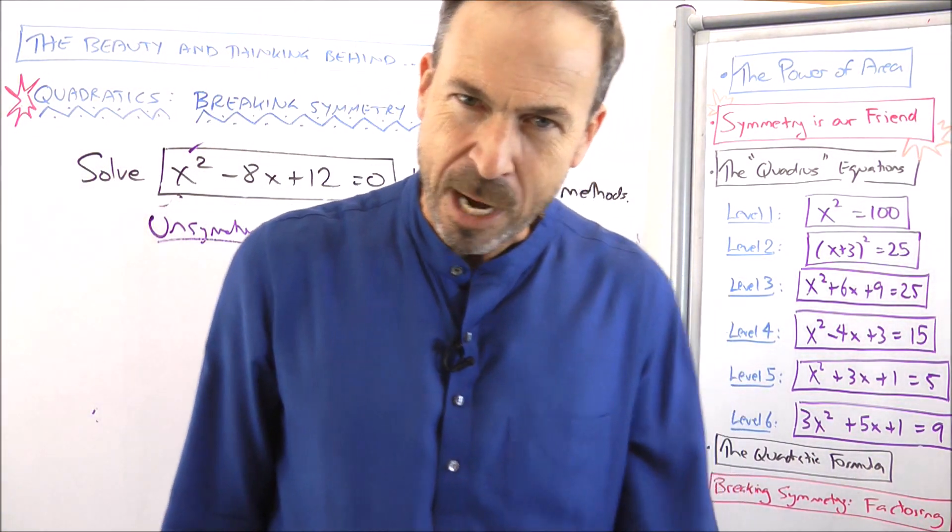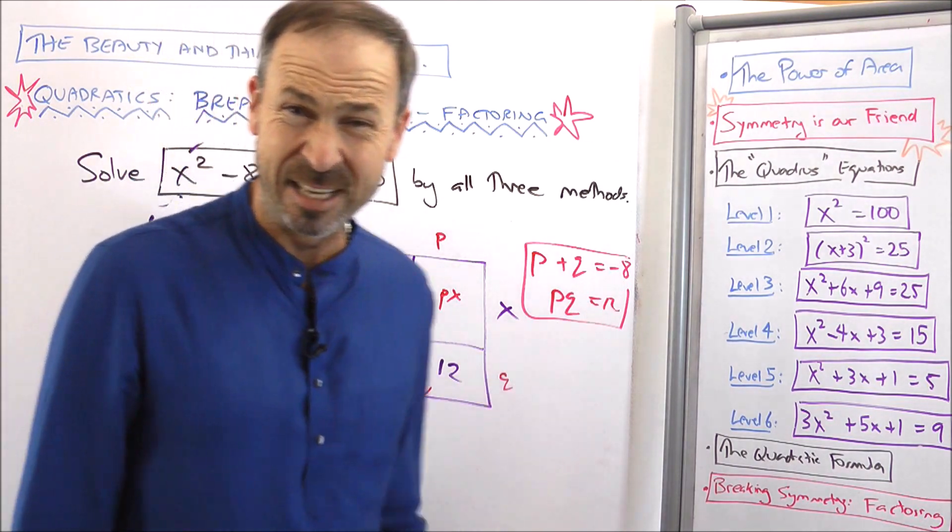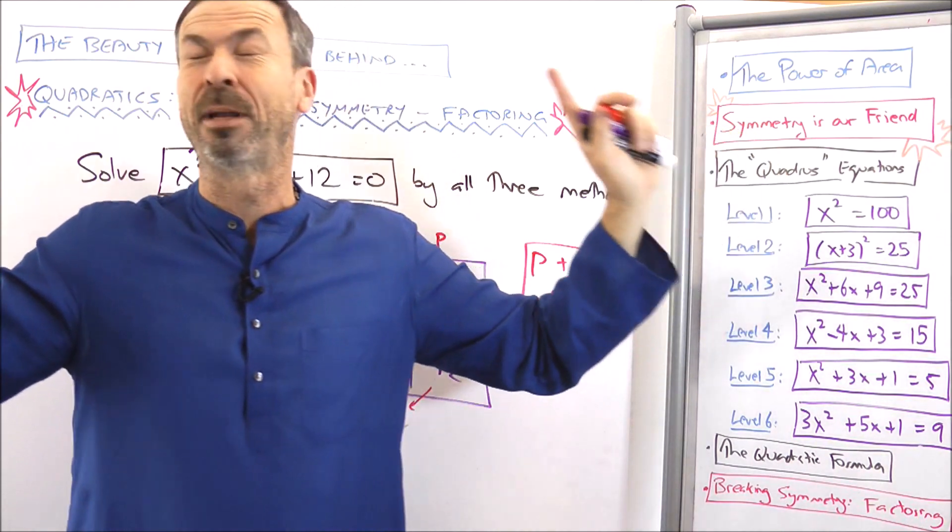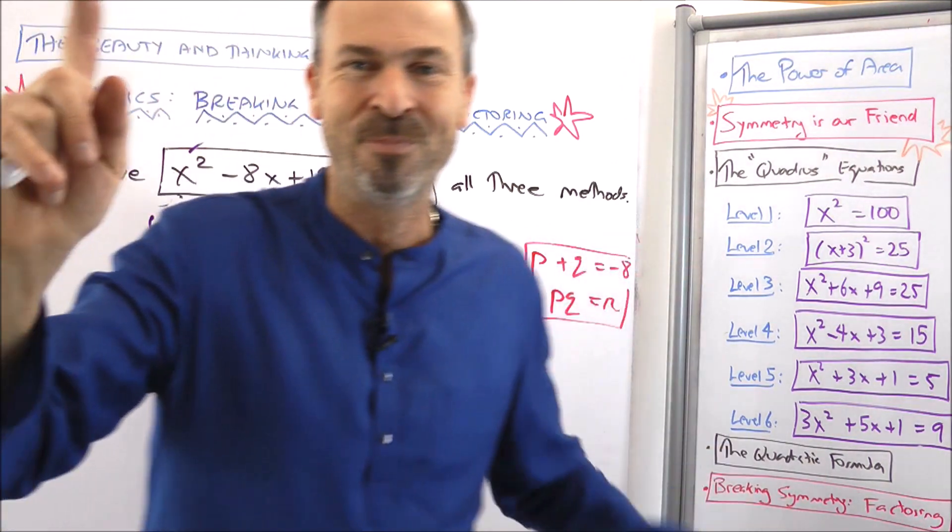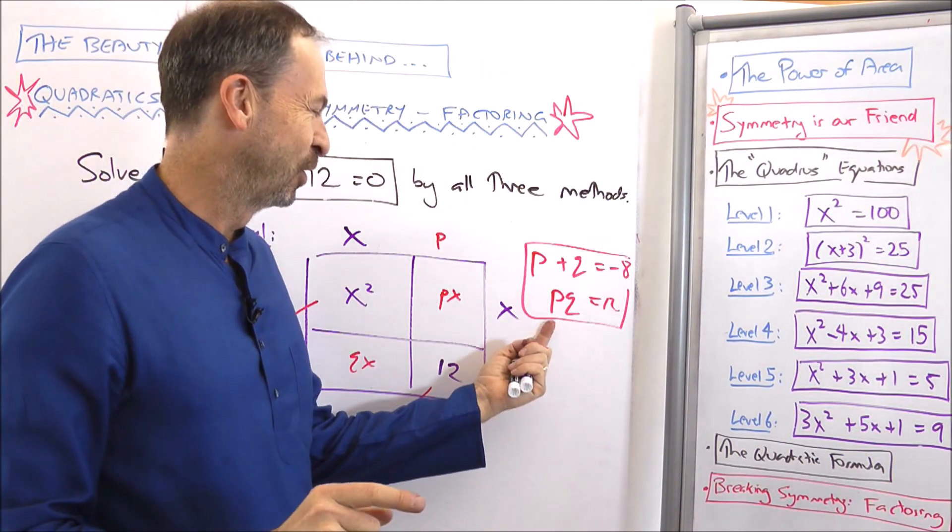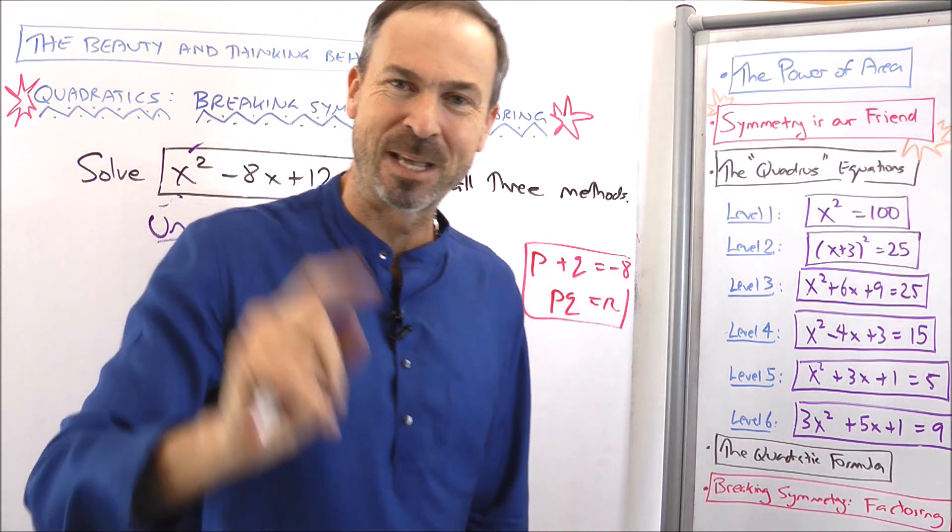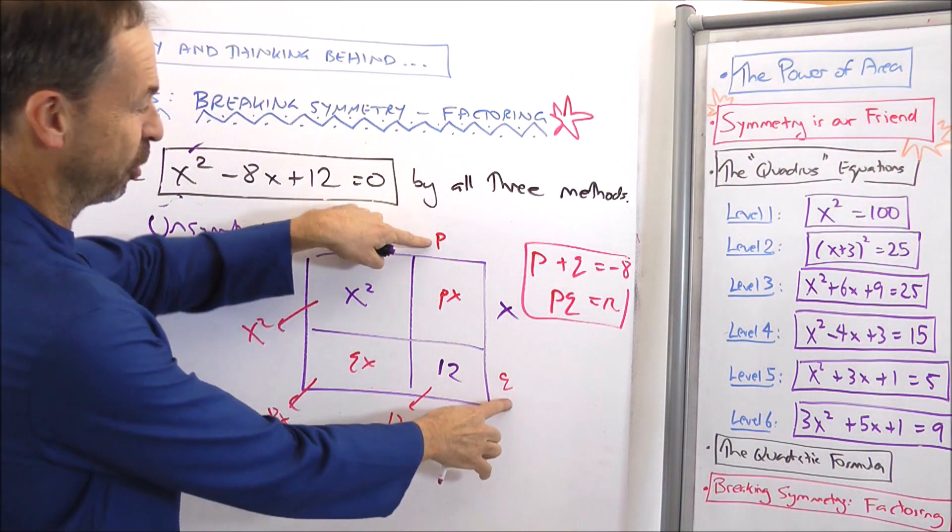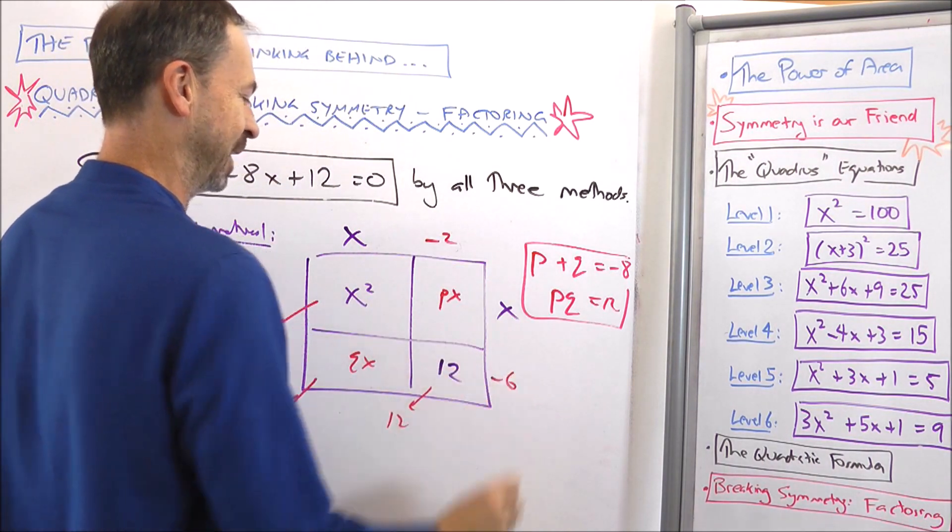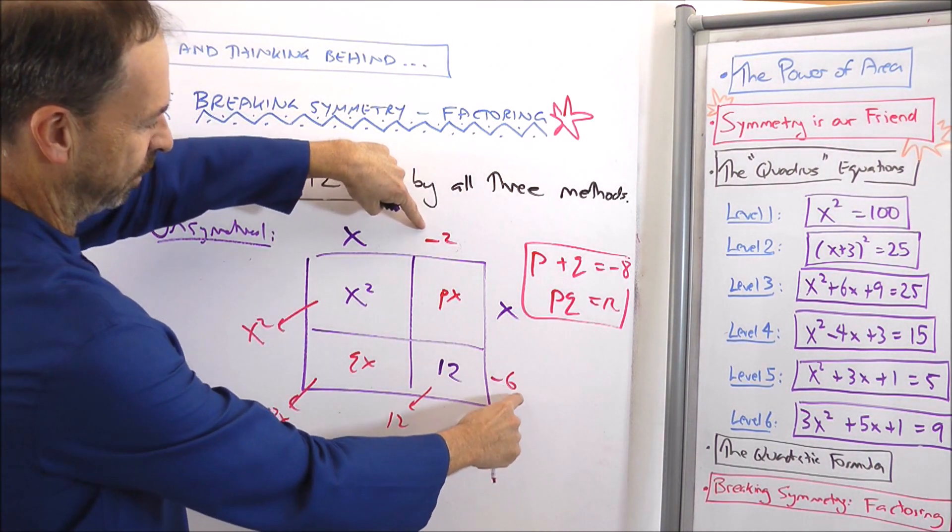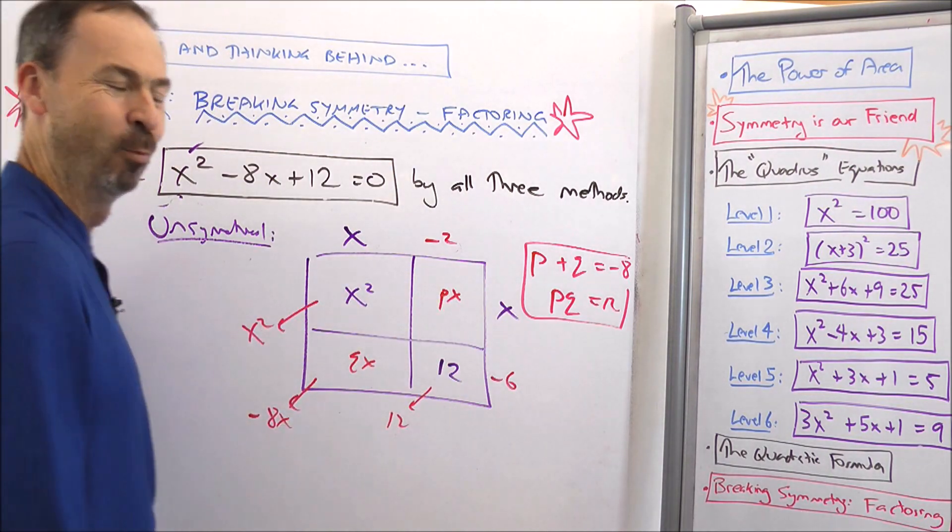So now we have to think. Are there a pair of numbers such that p plus q equals negative 8 and p times q equals 12? In fact, are they nice numbers? You have to think about this for a while. Just play with numbers in your head. What are the factors of 12? Maybe it's 2 and 6. No, 2 plus 6 adds up to positive 8. Oh! Negative 2 and negative 6. Negative 2 times negative 6 is 12. Negative 2 plus negative 6 is negative 8. They must be negative 2 and negative 6. Except the trouble is, I don't know which order. I'll just choose one. I'll choose negative 2 and negative 6. In which case, negative 2x, negative 6x, yes, it works. Negative 8x.